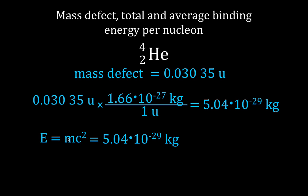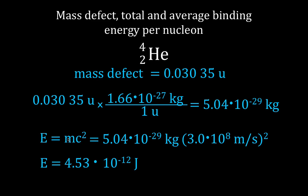We're just going to plug those values in — that's the mass defect in kilograms, that's the speed of light squared — and that gives us the binding energy for the helium-4 nucleus as 4.53 times 10 to the minus 12 joules.